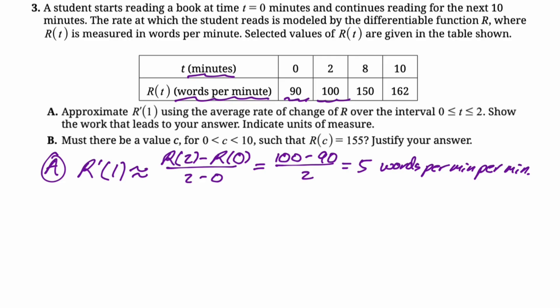If they were asking something about r prime, it would be a mean value theorem problem. But let's set it up. So we need, if we're going to use IVT, we need r to be continuous. We're not given that.